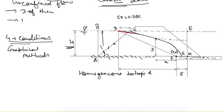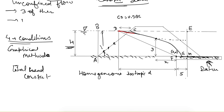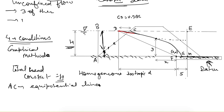For this earth dam, upstream water level is at height H, and downstream there is a filter so water does not rise but flows through it. The material is homogeneous and isotropic. We define the datum as the bed of this filter. On surface AC, the total head is constant — the sum of pressure head and datum head equals H at every point — so surface AC is an equipotential line.